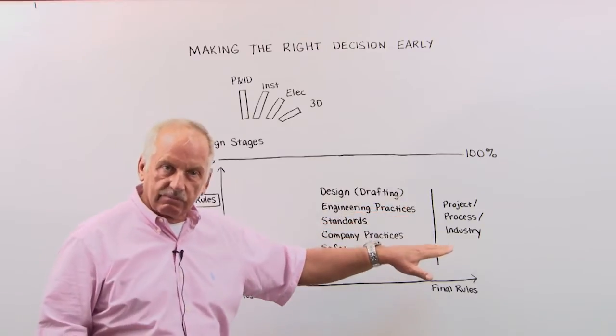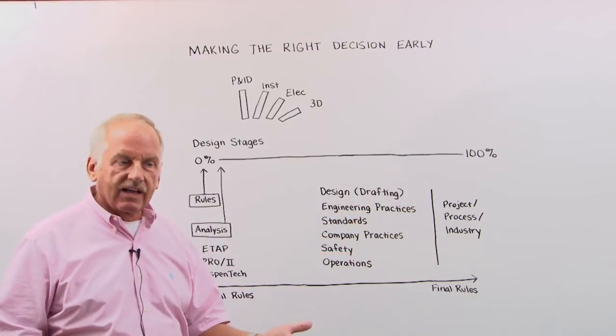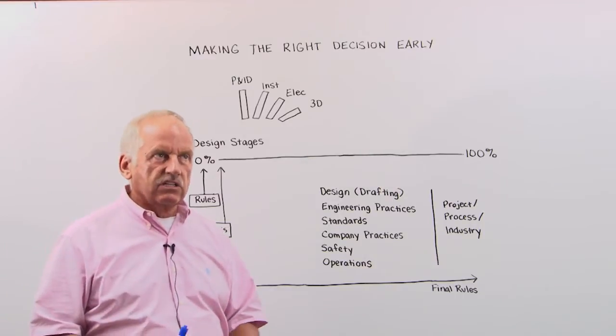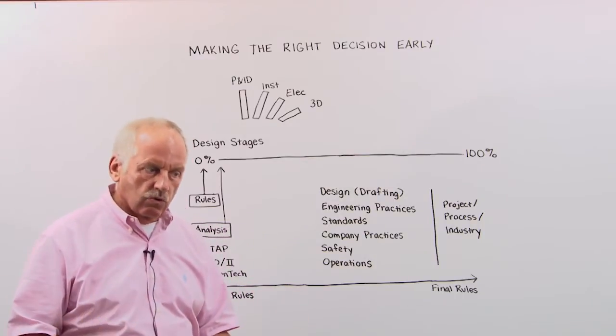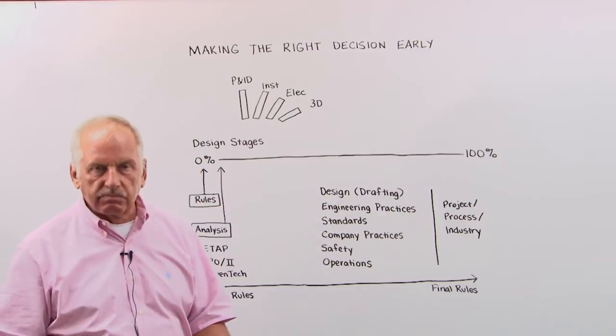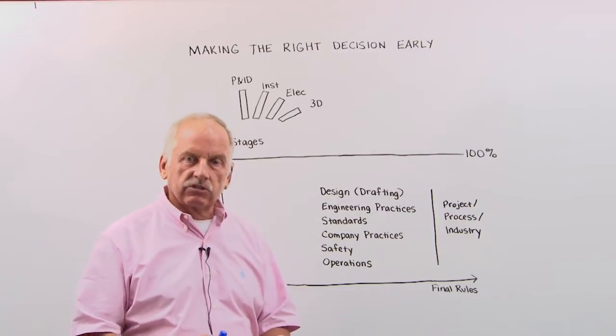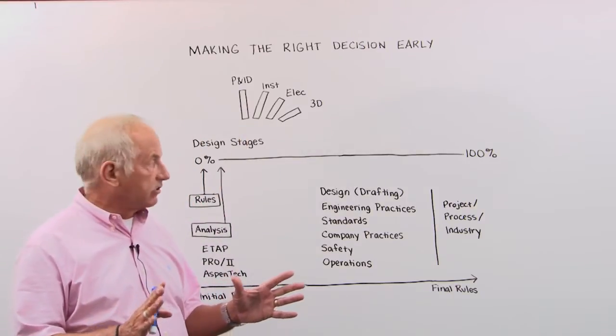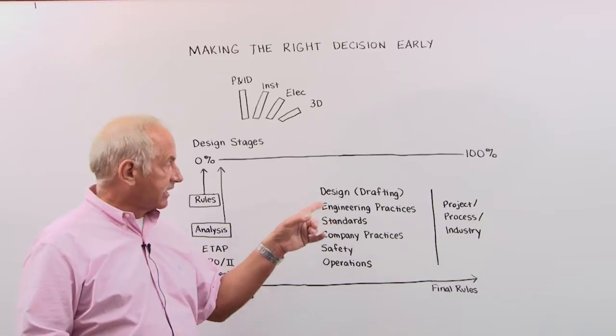For instance, on the design part, on the drafting part, you can check the design and make sure that the P&ID is created according to the rules and the standards of the owner. Like, for instance, maybe a Shell or an Exxon. They have their standards. Saudi Aramco, they have their standards. So you don't get any changes later on. So drafting and design standards is one thing.